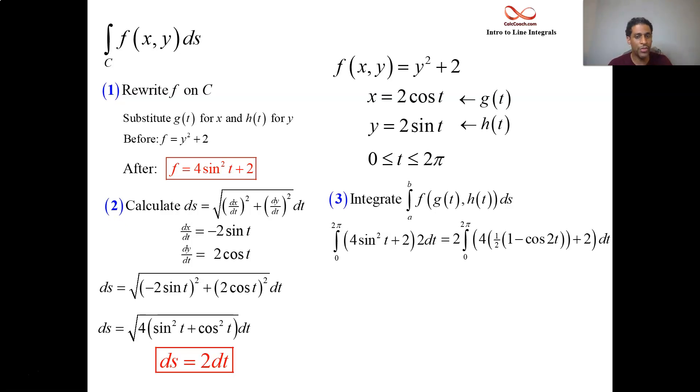Okay, and then we go from 0 to 2π, we can multiply that out, it'll be 2 and then it'll be minus cosine 2t and then there's the other plus 2 at the end there. Why did I also pull out a 2?